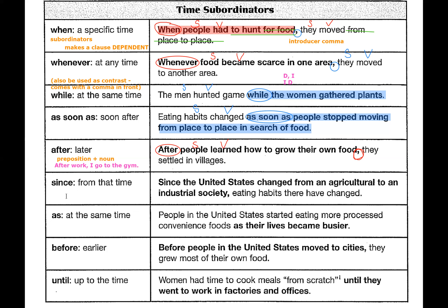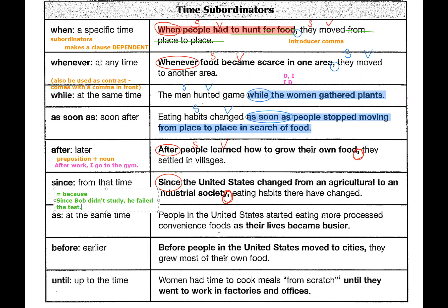And 'since' in this case means from a certain point in time. For example: 'Since the United States changed from an agricultural to an industrial society, eating habits there have changed.' We have our dependent clause first, so that gives us: Dependent + introducer comma + Independent. Remember that 'since' can also mean cause and effect — like 'because.' For example: 'Since Bob didn't study, he failed the test.' So 'since' has two different meanings.